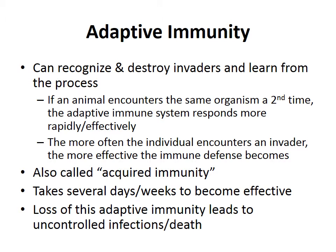Now we get into adaptive immunity — the part with memory. The adaptive immune system can recognize and destroy invaders and learn from the process. If an animal encounters the same organism a second time, the adaptive immune system responds more rapidly and effectively. Think about when you were a kid in daycare getting many colds per year — now you only get one or two because your adaptive immune response is ready. Adaptive immunity is also called acquired immunity — the terms are interchangeable.